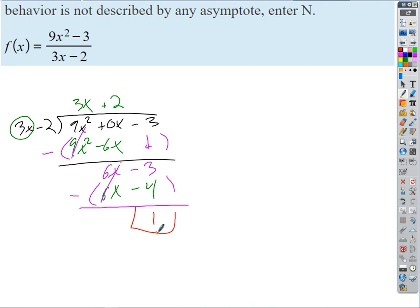And so this is actually equal to, then if we write this out, if we actually go through the process of simplifying this quotient, we get 3x plus 2 plus 1 is what remains over the denominator. Right?